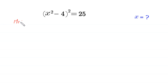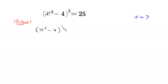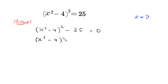In Method 1, we move 25 to the left-hand side. The equation becomes (x² - 4)² - 25 = 0. This 25 can be written as 5², so we have (x² - 4)² - 5² = 0.